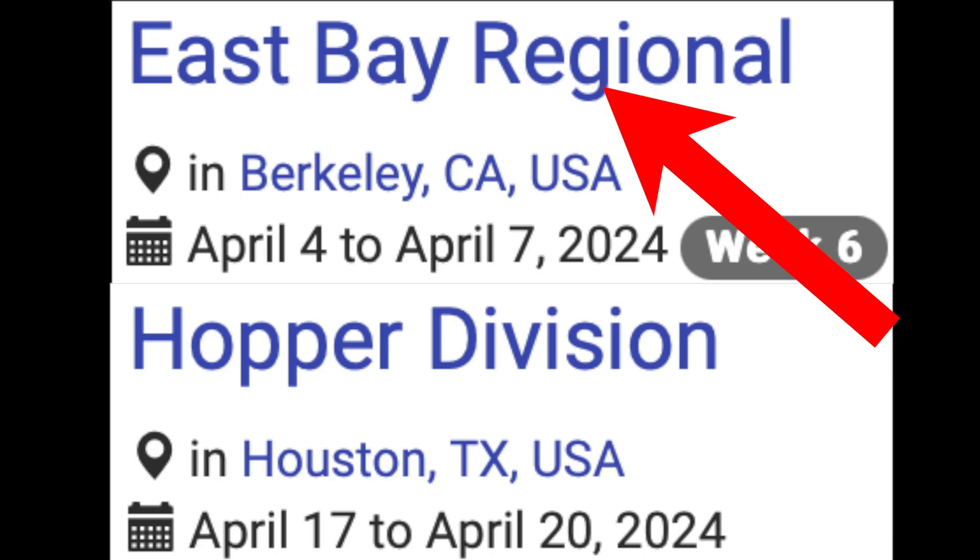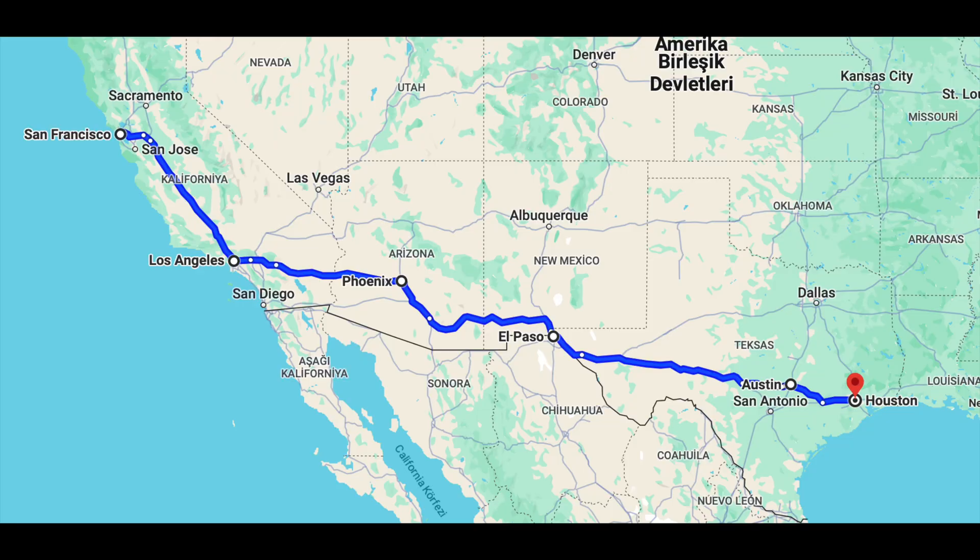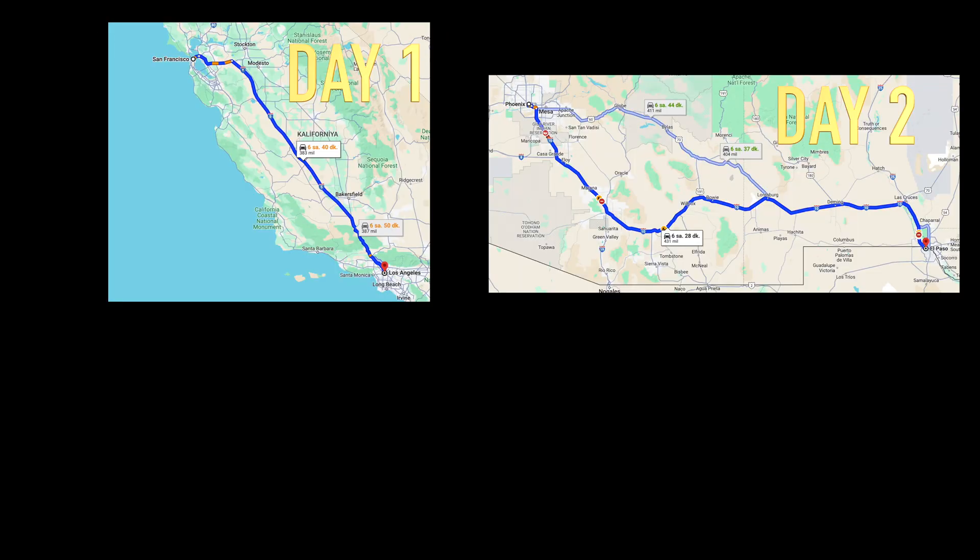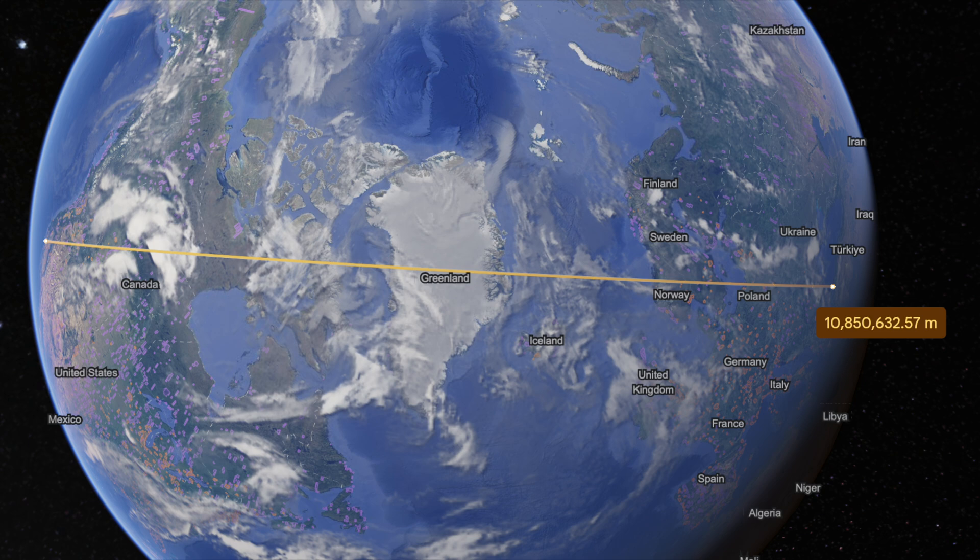After the East Bay Regional, the championship was days away and we were left with an underperforming intake. With only four days to get to Houston, we had mere days to fully design, construct, test and tune the new intake. Having our workshop over 10,000 kilometers away didn't help.